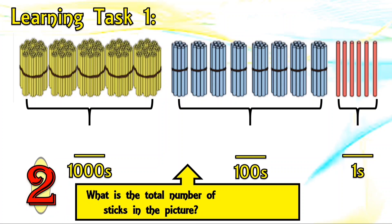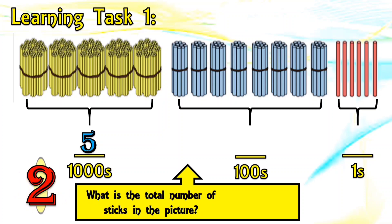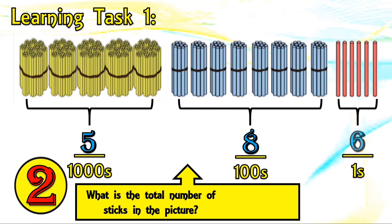How many thousands, hundreds, and ones do we have in the next picture? Right, we have five thousands. We have four hundreds. And last, we have six ones.